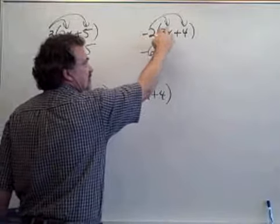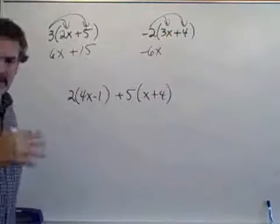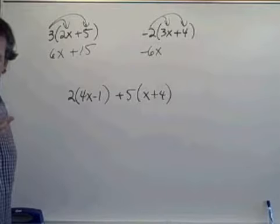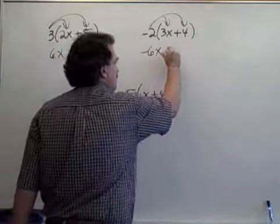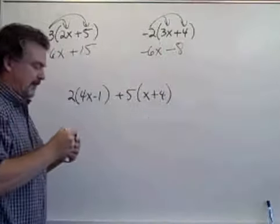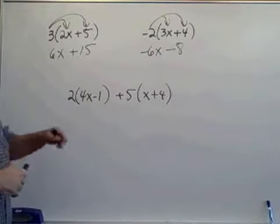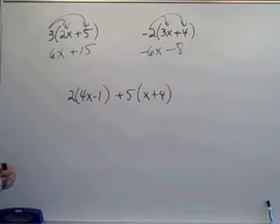Think of this as negative 2 times positive 4. Well, negative 2 times positive 4 would give us negative 8, so I write minus 8. And I've removed the parentheses in that expression.